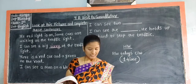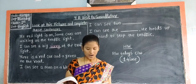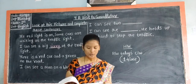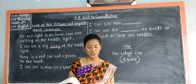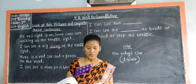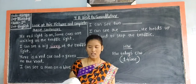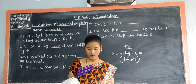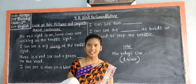Second sentence: 'There is a red car and a green ___ on the road.' Look at the picture children. What you can see? There is a red car and a green bus on the road. So write 'bus' in the blank.